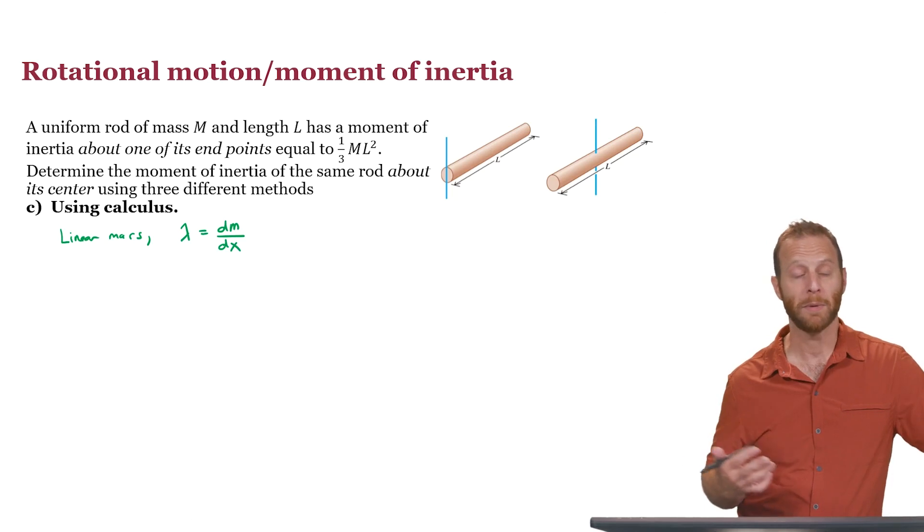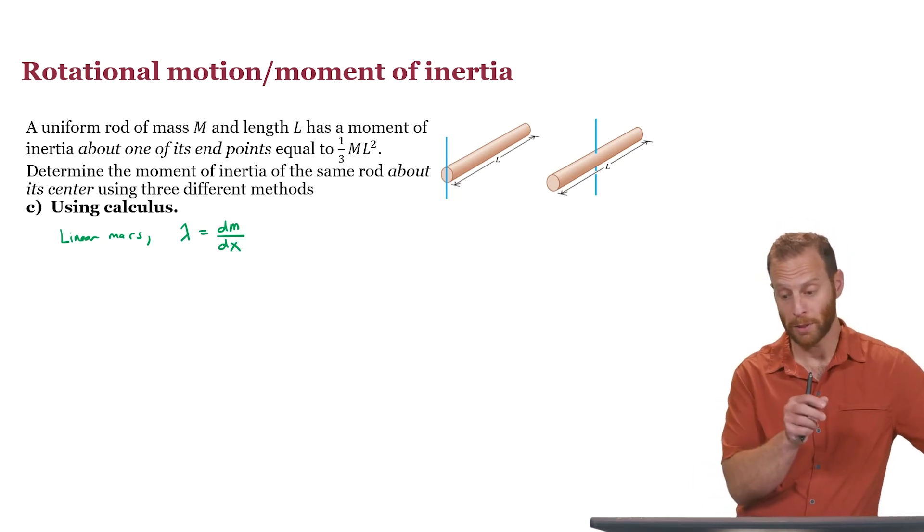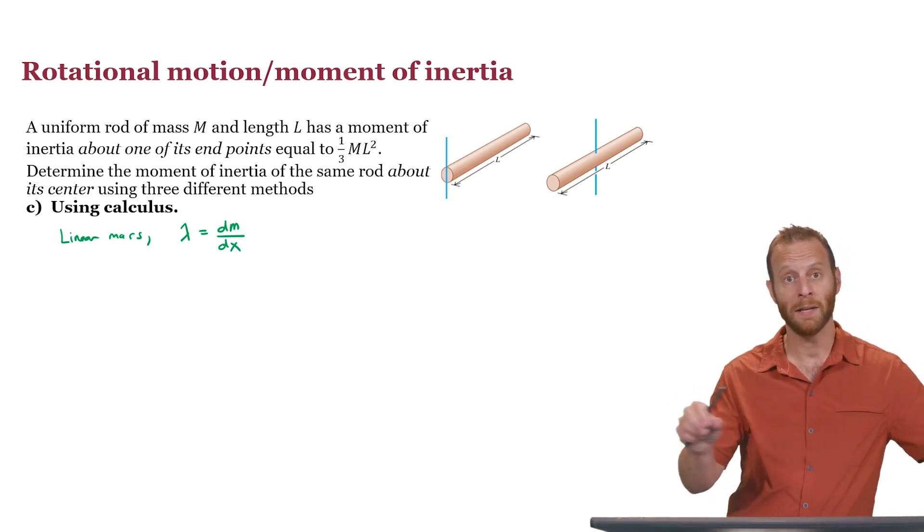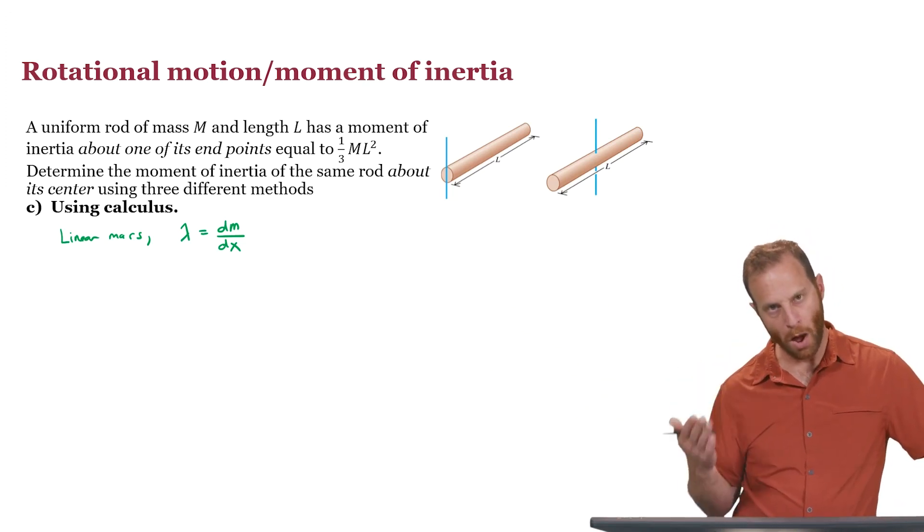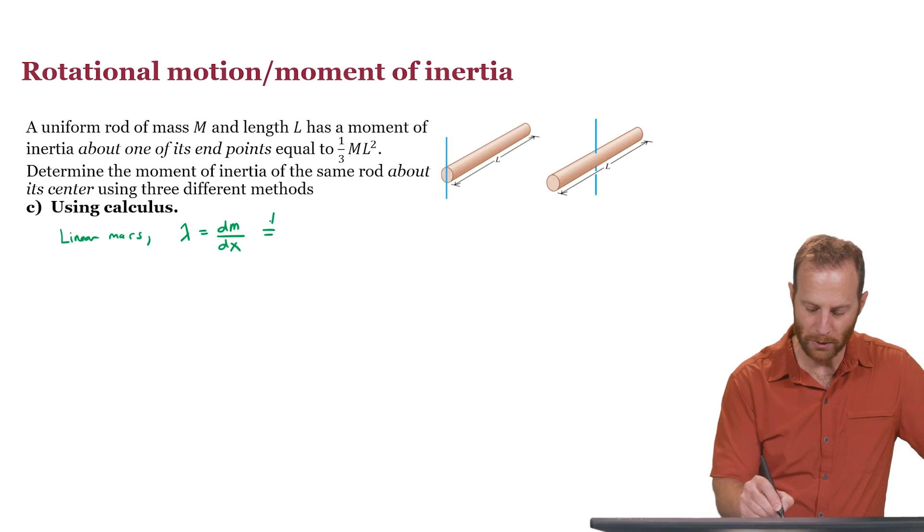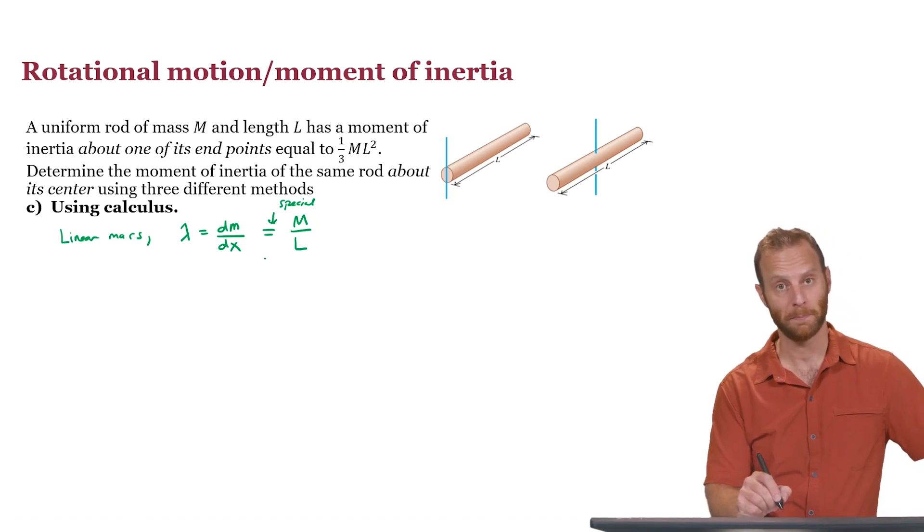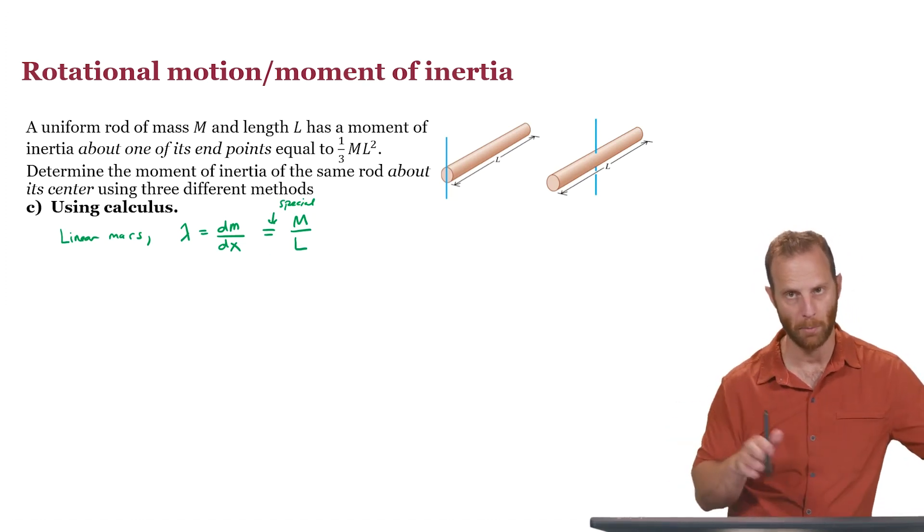And in general, lambda is going to be a function of position because linear mass density can get bigger or smaller throughout the length of a rod. But if the rod is uniform, then in the very special case here, this turns out to just be the mass of the rod divided by its length. So we're going to keep that in our back pocket.